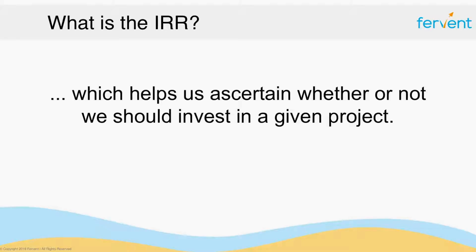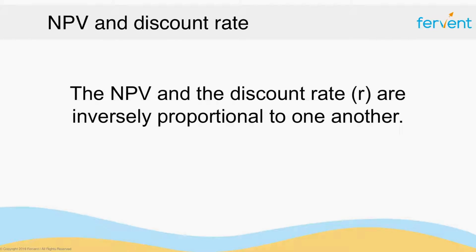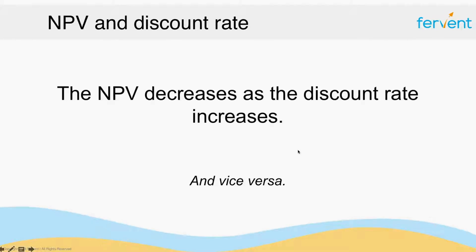So what does the IRR look like? Specifically, the IRR is the point at which NPV is equal to zero — it's the discount rate that gives you an NPV equal to zero. This can seem counterintuitive at first, but it will make sense by the time you're done with this video. If we think about the relationship between the NPV and the discount rate, they have an inverse relationship: the NPV decreases as the discount rate increases, and vice versa.